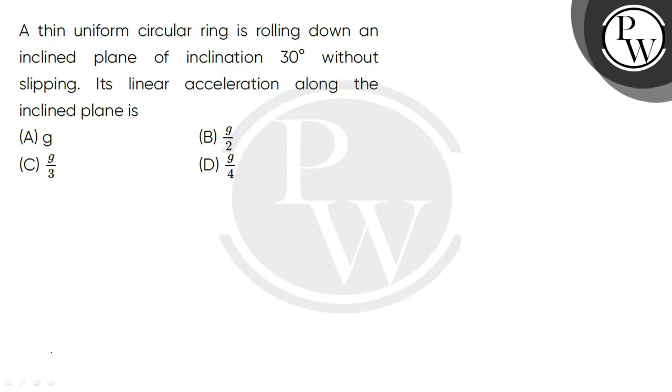First question: A thin uniform circular ring is rolling down an inclined plane of inclination 30 degrees without slipping. Its linear acceleration along the inclined plane is... A thin uniform circular ring is rolling down the inclined plane, angle of inclination is 30 degrees. This is our inclined plane.